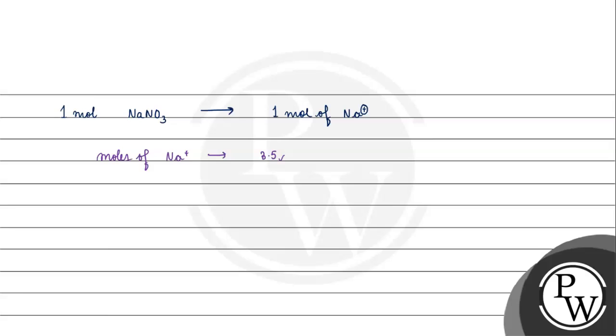3.5 grams divided by 23 grams per mole, so we have 3.5 by 23 moles.